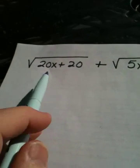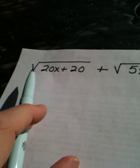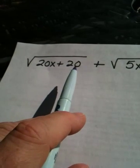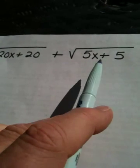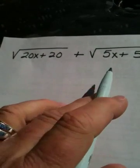Okay, let's look at this question. We've got the square root of 20x plus 20, and we're trying to add it to the square root of 5x plus 5. Now, you cannot add these two because they're not like.